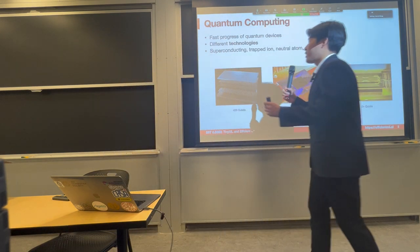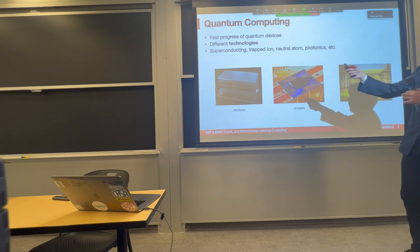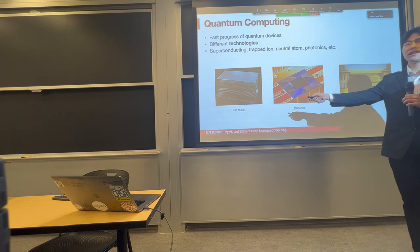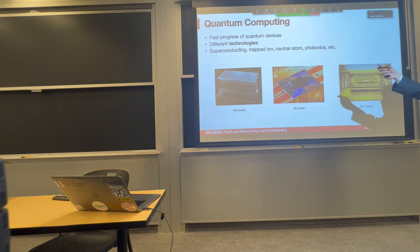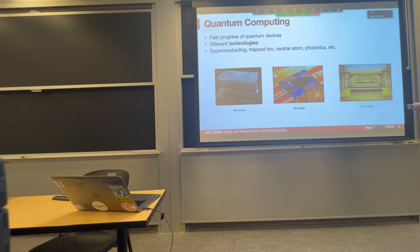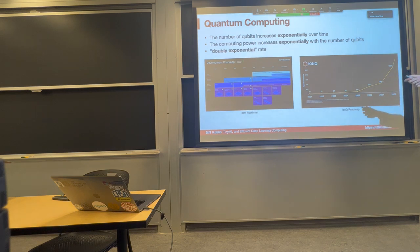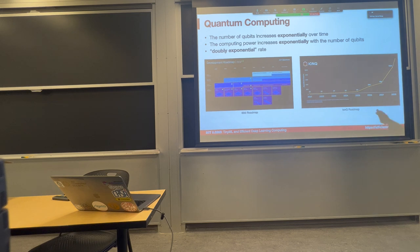Recently, quantum computing devices are undergoing very fast progress. We have different technologies, and just several days ago IBM released the newest 433-qubit device. The number of qubits is going up exponentially. That's not just for superconducting, but also for several other technologies such as neutral atom, photonics, and quantum computers. The middle one is the Google Sycamore quantum computer, which proved quantum advantage. The number of qubits recently increased exponentially — more like a Moore's law in quantum computing. But the computing power is not just linear to the qubit number; it's also exponential, giving a double exponential increase in computing power.